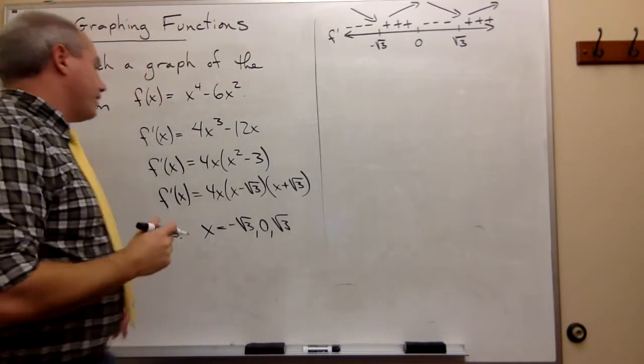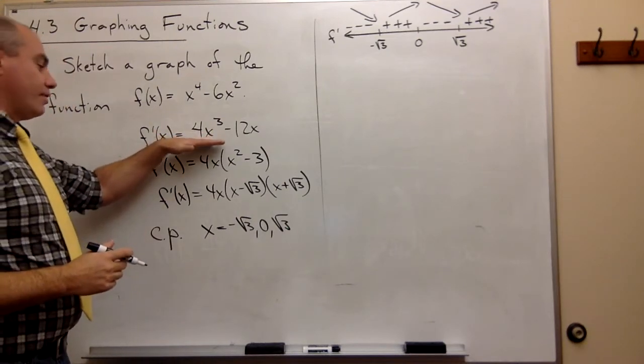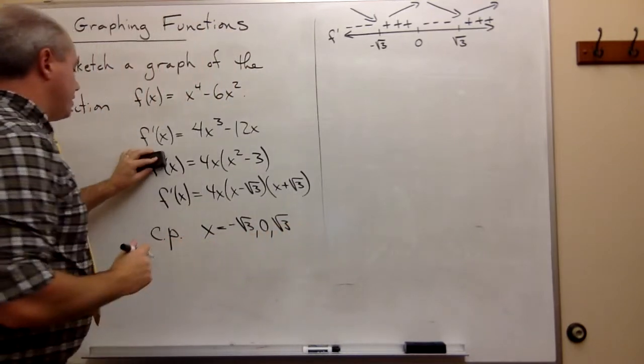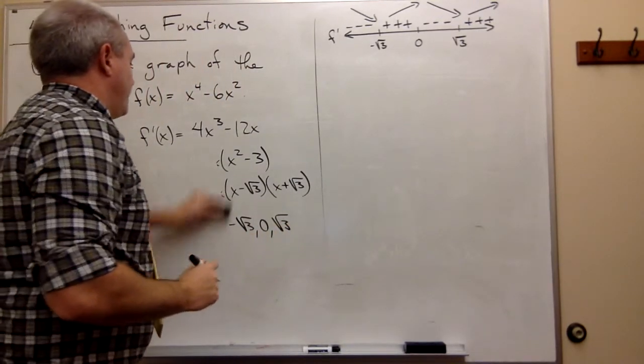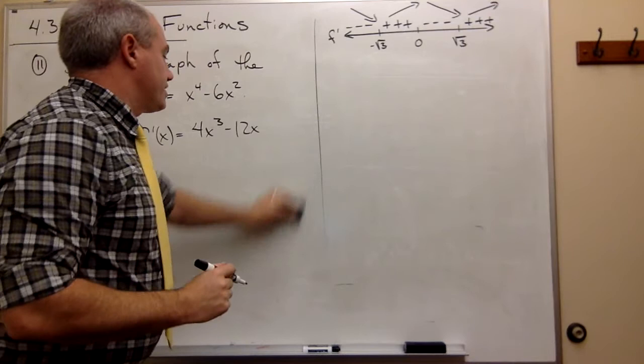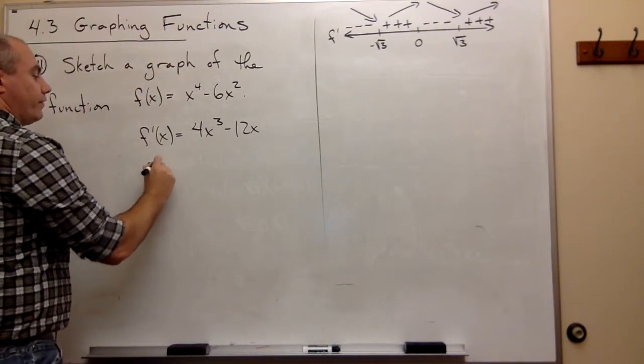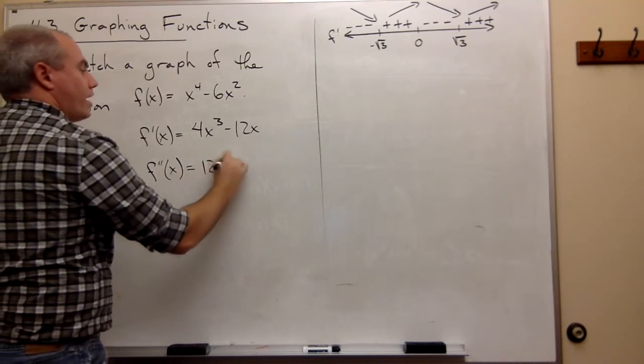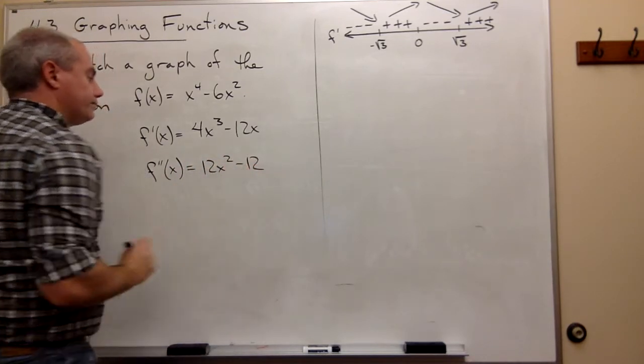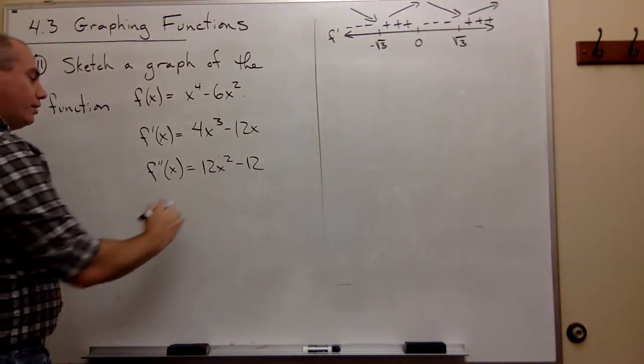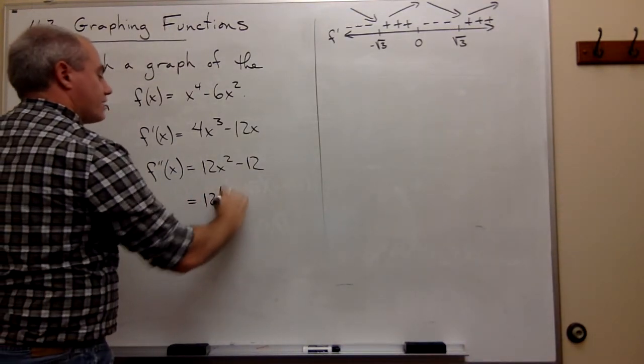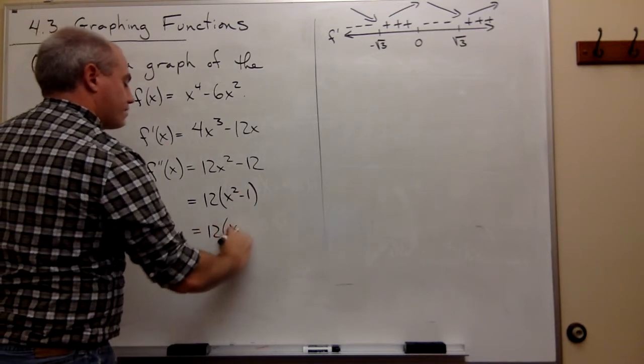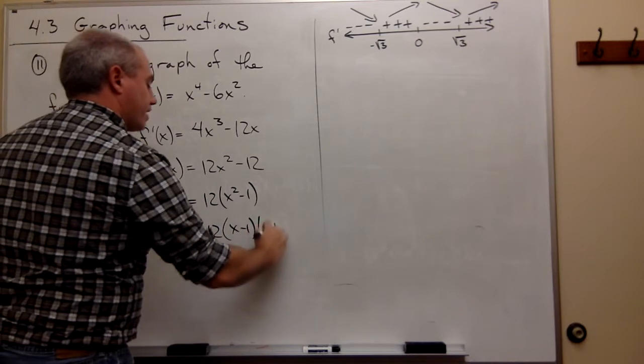Now that I've got the first derivative, now I'm ready to take a second derivative. I've got all the information I need here, so I can go ahead and erase and look at the second derivative. So the second derivative of this function would be 12x squared minus 12. Or if you prefer, this is 12 times x squared minus 1, or 12 times x minus 1 times x plus 1.